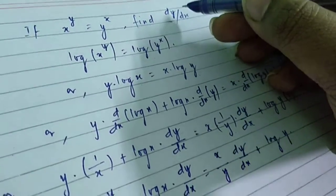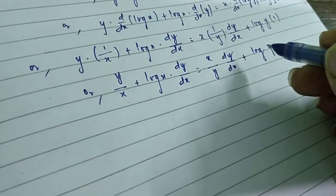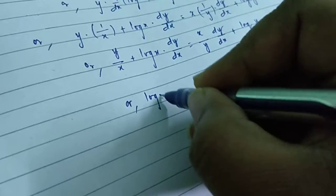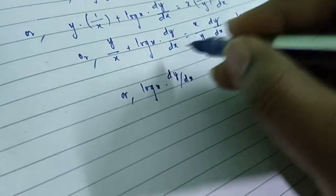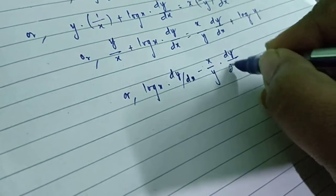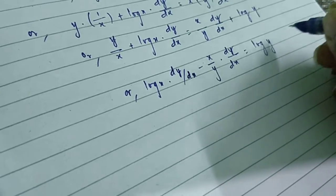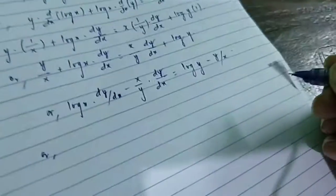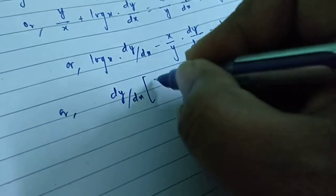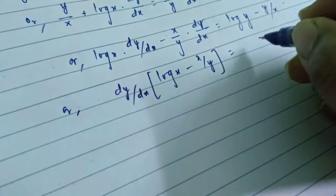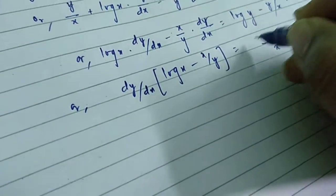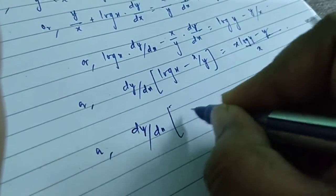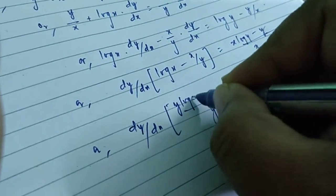Since we have to calculate dy/dx, we bring all terms containing dy/dx to the left hand side and the non-dy/dx terms to the right hand side. This gives log x times dy/dx minus x over y times dy/dx equals log y minus y over x. Taking dy/dx as common on the left side, we get dy/dx times (log x minus x over y). Taking y as LCM gives dy/dx times (y log x minus x) over y.